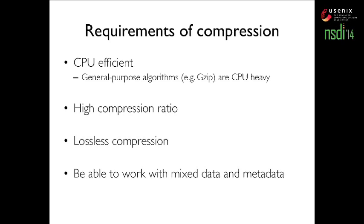Second, our algorithm should be able to achieve a very high compression ratio, because we want to co-locate many processes on the same machine. Third, our algorithm should be lossless because we cannot lose metadata. The final requirement is a bit subtle: our algorithm should be able to work with mixed data and metadata.